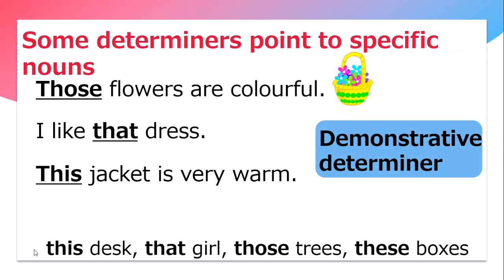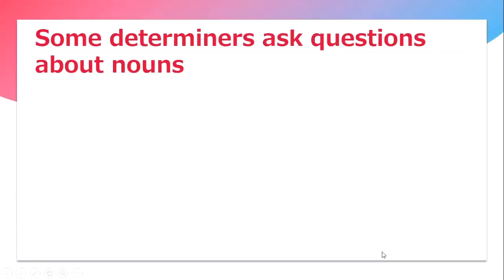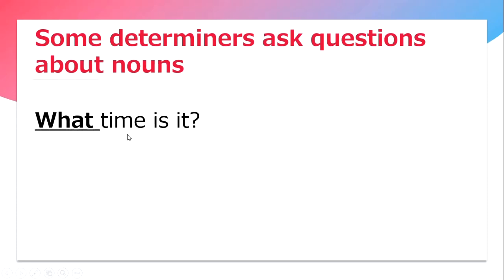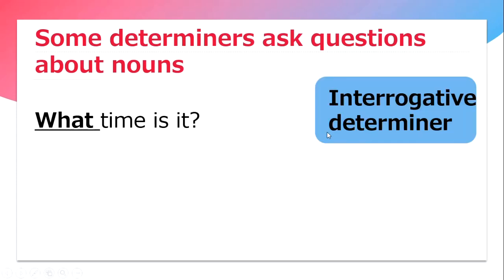The other examples are: this dress, that girl, those trees, these boxes. Some determiners ask questions about nouns. For example, what time is it? Here, 'time' is a noun and 'what' is used to ask a question. It is a determiner coming in front of the noun, and this is known as an interrogative determiner.